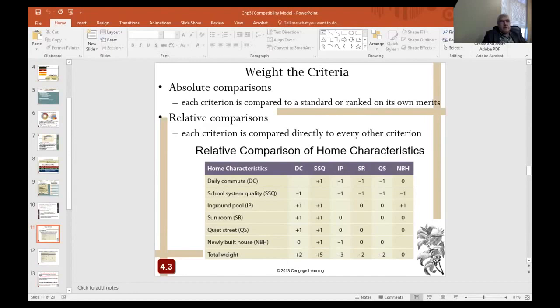The first one is absolute comparison. Look at each criterion and compare this criterion to a standard or rank it on its own merits. For relative comparison, each criterion is compared directly to every other comparison. This slide gives you an example about relative comparison. The home characteristics we are looking for are listed here on the left column. And then each column represents the importance of criteria.